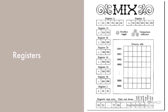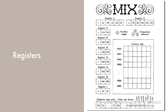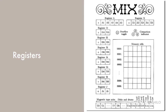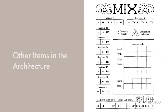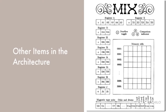The accumulator and the extension register are used for arithmetic and operating on data. The index registers are used primarily for counting and for referencing variable addresses. The J register holds the address of the instruction following the most recent jump operation. MIX also has an overflow toggle, a comparison indicator, a 4000-word memory, and input-output devices.